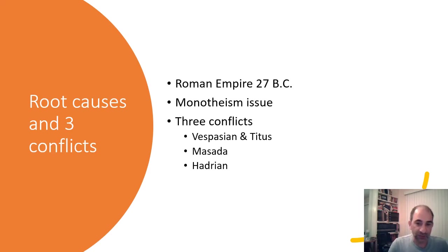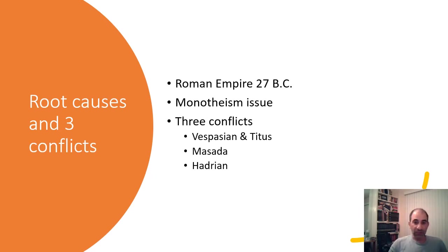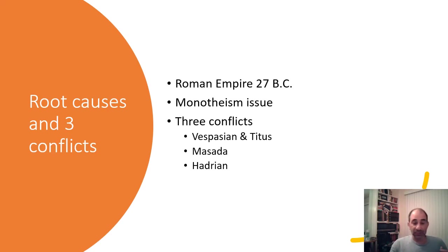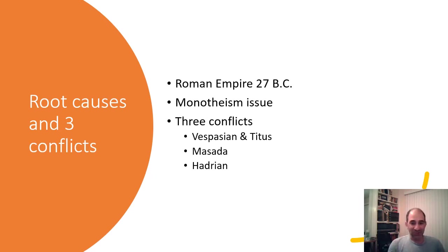There are three major conflicts that are going to take place: one during the emperor Vespasian and his son Titus, then the story of Masada which also takes place during Vespasian and Titus, and then the story of Roman emperor Hadrian. These three events are very important to the land of Judea, and when we get to the last one, its impact lasts for centuries.